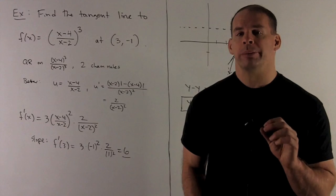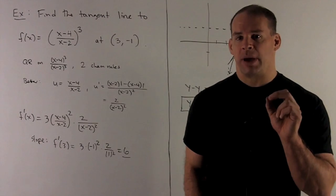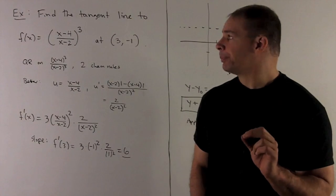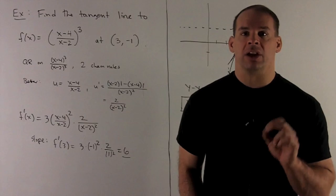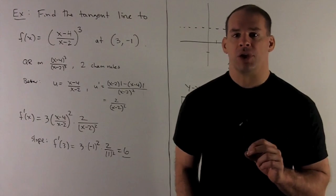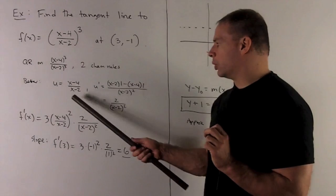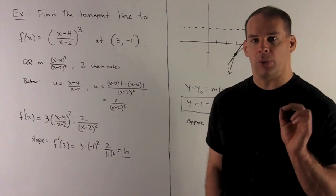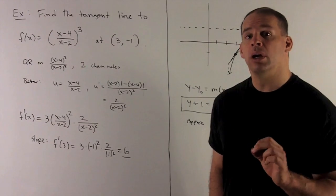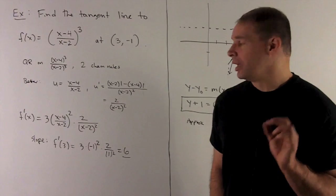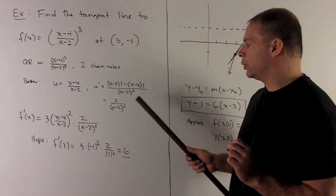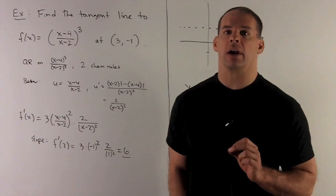So what we're going to do is, I'll let our inside be our u. So u is going to be x minus 4 over x minus 2. Then we're going to let our outside be u cubed. So with our inside as u, u prime is just going to be given by the quotient rule. So we do our low d high, less high d low, over low squared. That's going to collapse down to 2 over x minus 2 quantity squared.